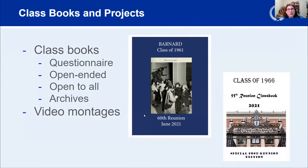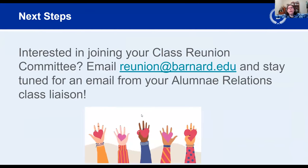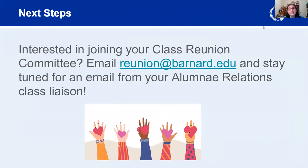Interested in joining your class reunion committee? Email reunion@barnard.edu and stay tuned for an email from your alumni relations class liaison. If you know your class officers, you can also reach out to them directly. We highly recommend that class officers personally reach out to friends and people you were close to in college and say: 'I'm president, vice president, class correspondent, class agent — and we're getting together a reunion committee and we'd love to have you as part of it, representing the West Coast or wherever you are.'